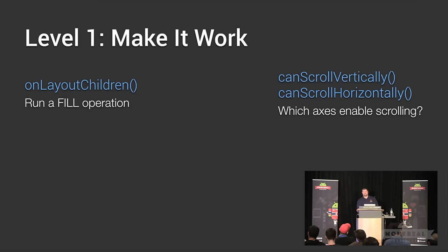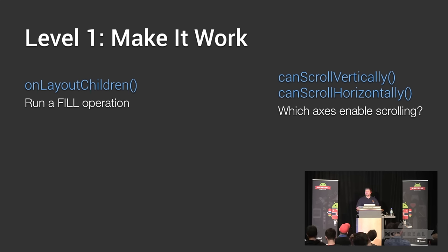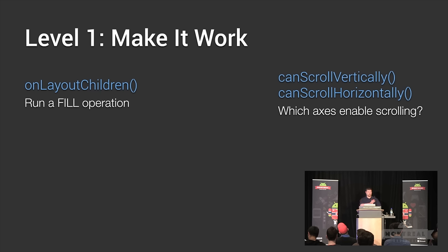You also have to report back to the framework which axis this view can scroll in by overriding 'canScrollHorizontally' and 'canScrollVertically'. In most cases you'd only return true from one of these, but the fixed-grid implementation returns true for both, so it can scroll horizontally and vertically at the same time. If you don't return true from these methods, RecyclerView simply won't deliver scroll events back to you in that direction — it locks scrolling in that orientation.